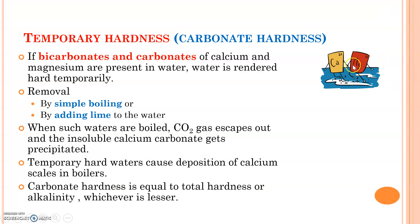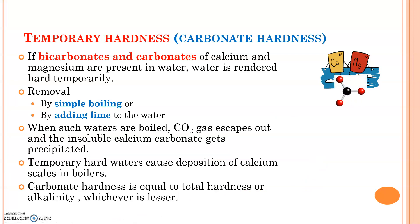So carbonate hardness is associated with the alkalinity value, and this represents the association of carbonates with calcium and magnesium salts.